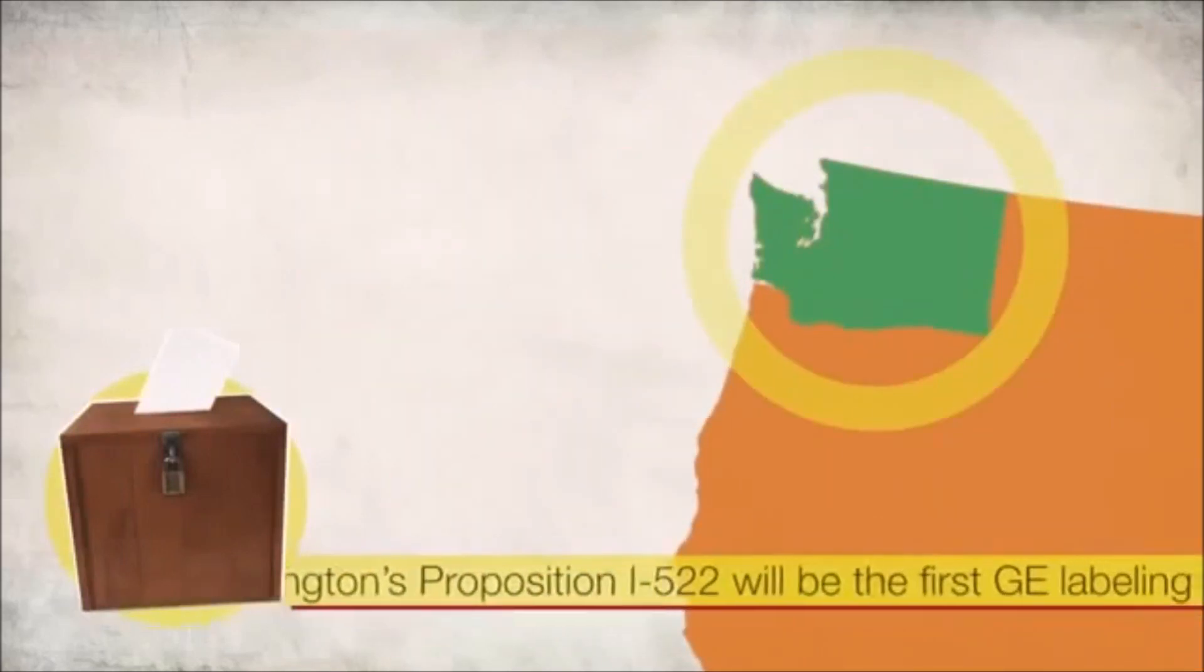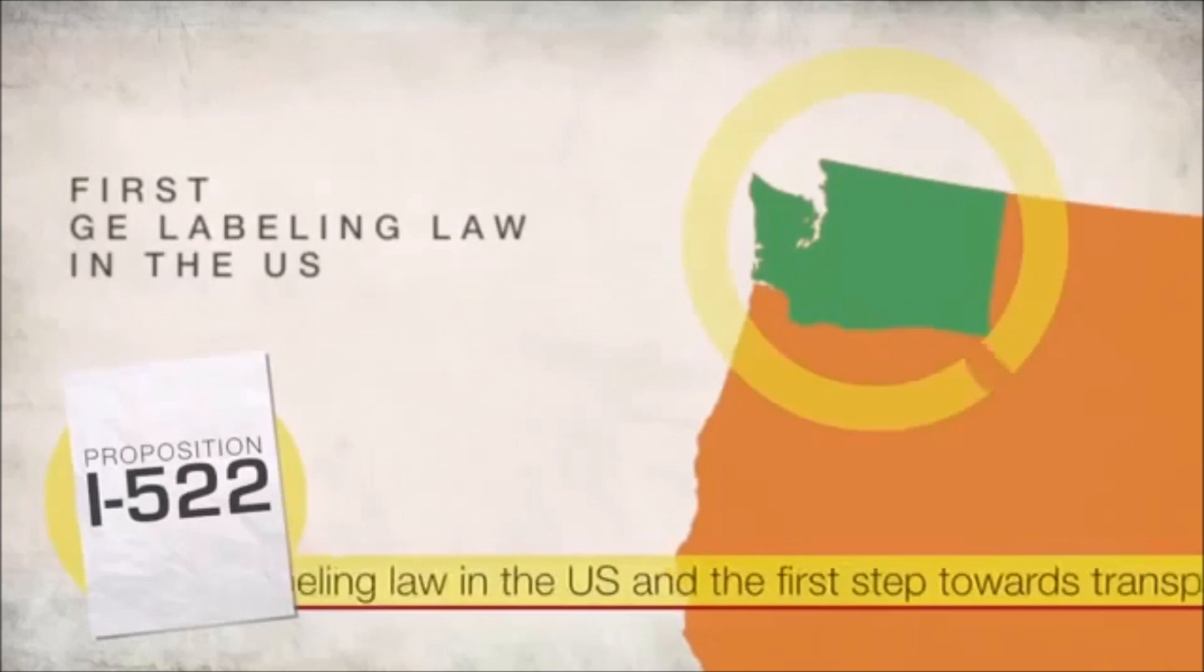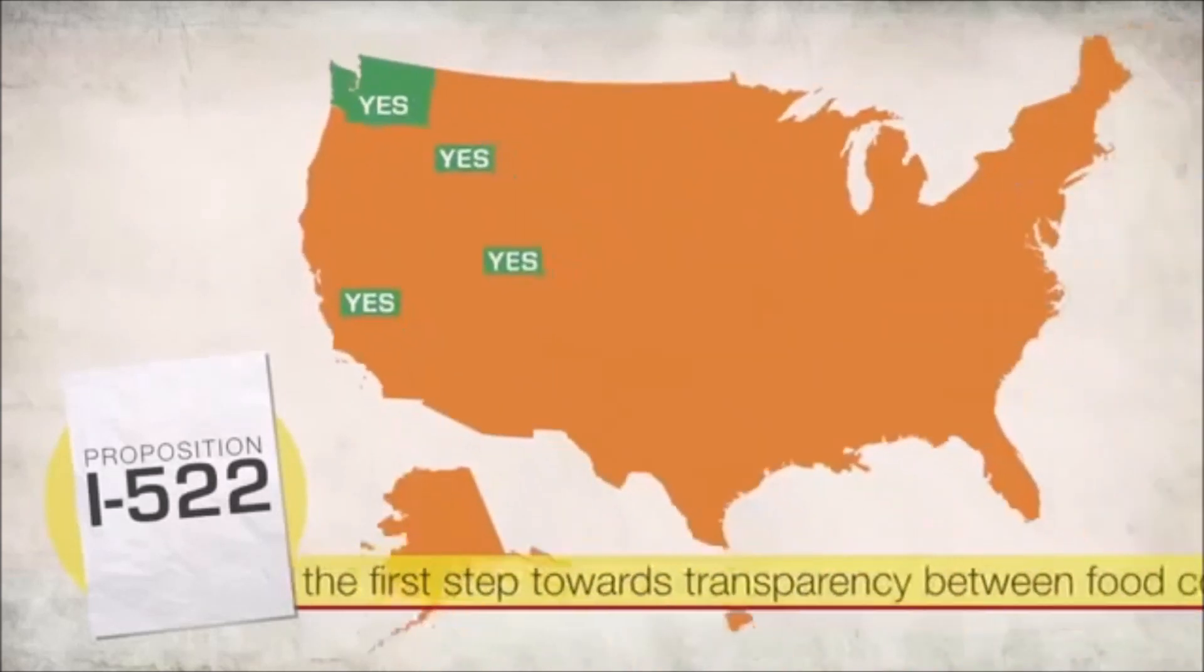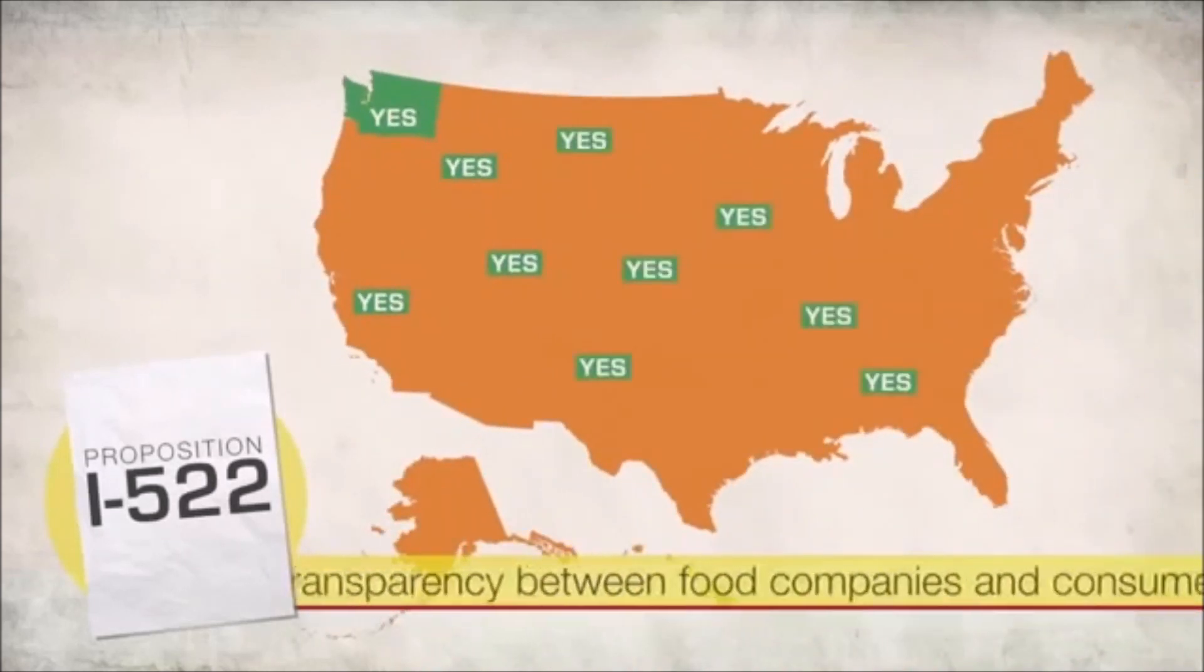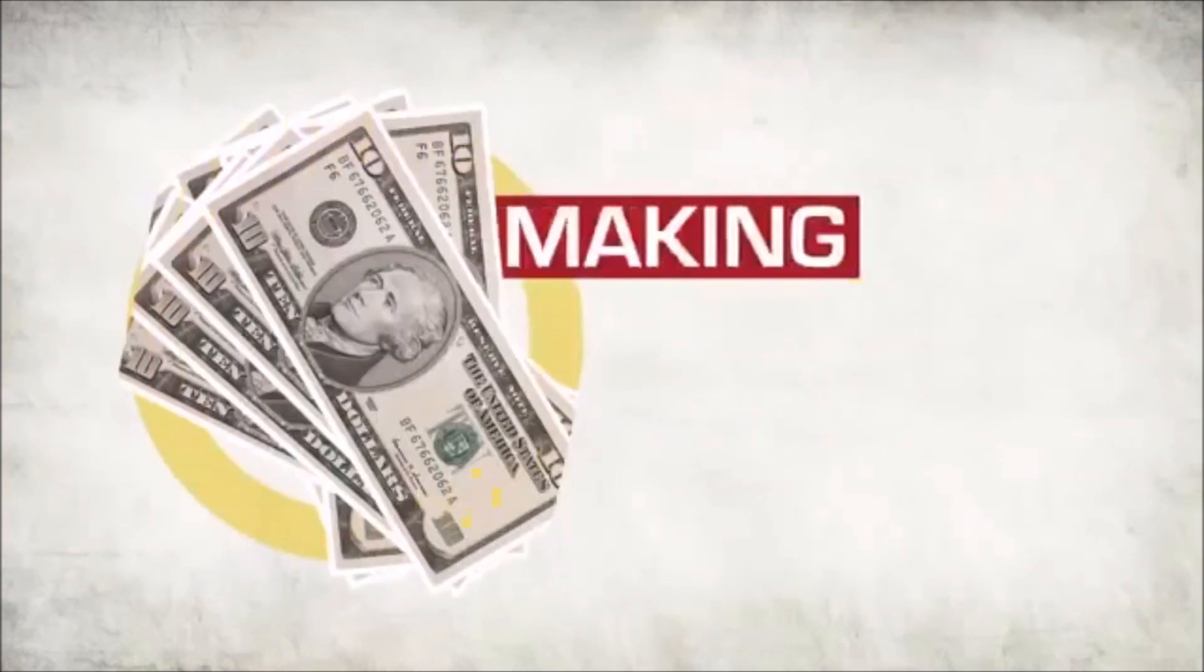With enough votes, Washington's Proposition I-522 will be the first GE labeling law in the U.S. and the first step towards transparency between food companies and consumers, giving you the right to know.